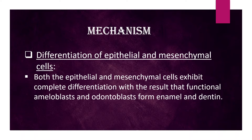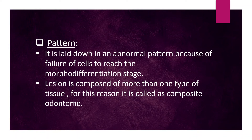Mechanism — Differentiation of epithelial and mesenchymal cells: Both the epithelial and mesenchymal cells exhibit complete differentiation, with the result that functional ameloblasts and odontoblasts form enamel and dentin. It is laid down in an abnormal pattern because of failure of cells to reach the morphodifferentiation stage.